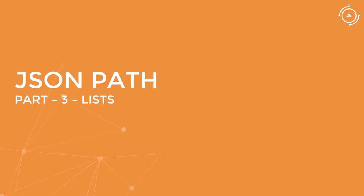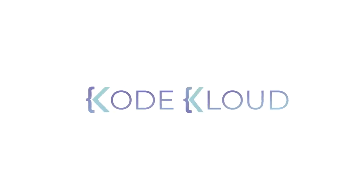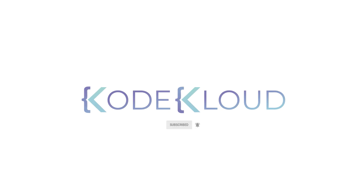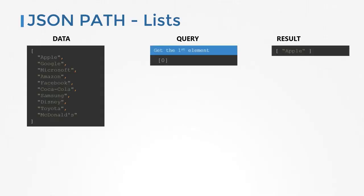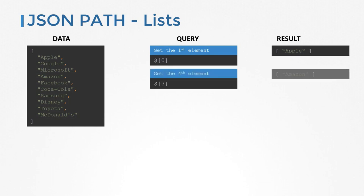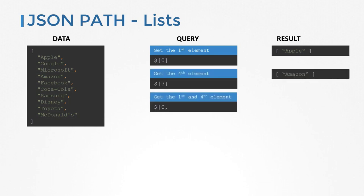Hello and welcome to this demo. My name is Mumshad Manambath and this is the continuation of the series of videos on JSON path. In this video, we will get introduced to some of the advanced options available while working with JSON path queries, specifically lists. We learned earlier about lists. Here's the list of top 10 brand names on Forbes. To get the first element, we say $[0]. To get the fourth element, we say $[3]. And to get the first and the fourth element, we say $[0,3].